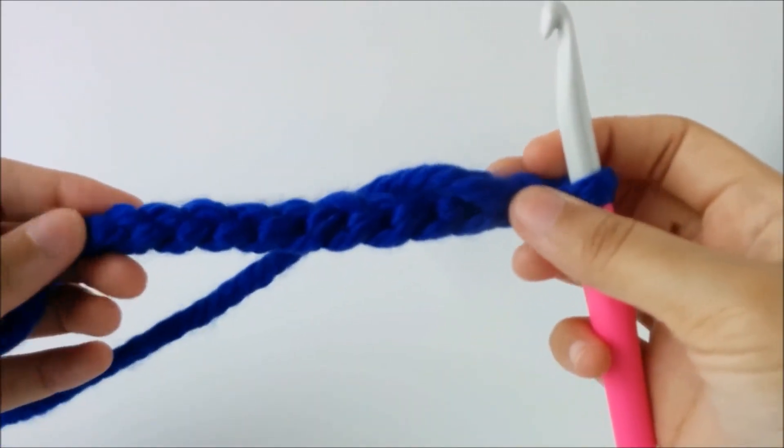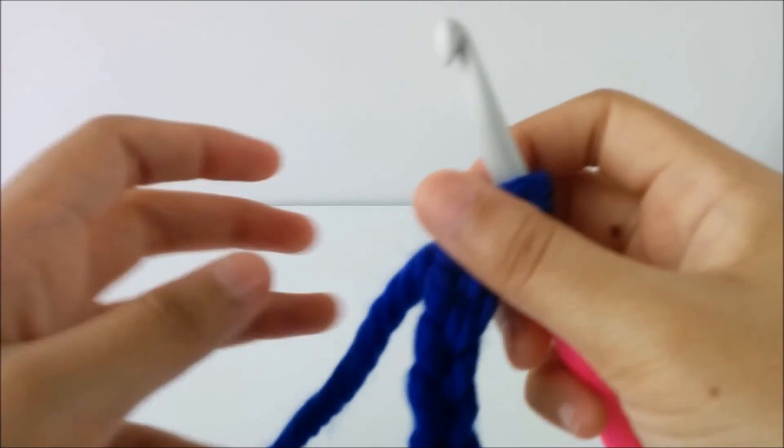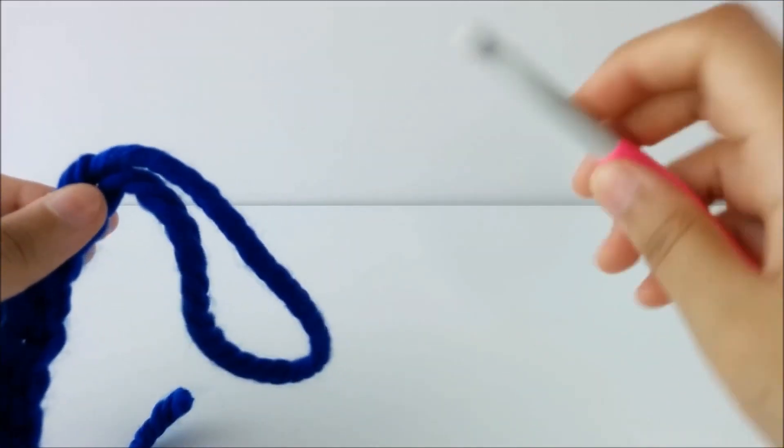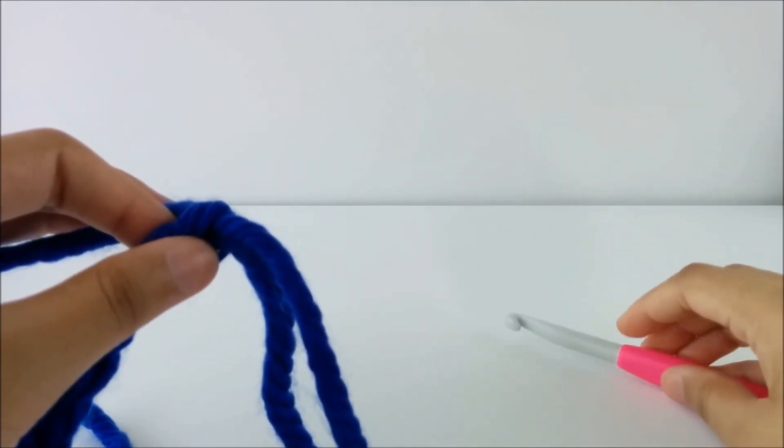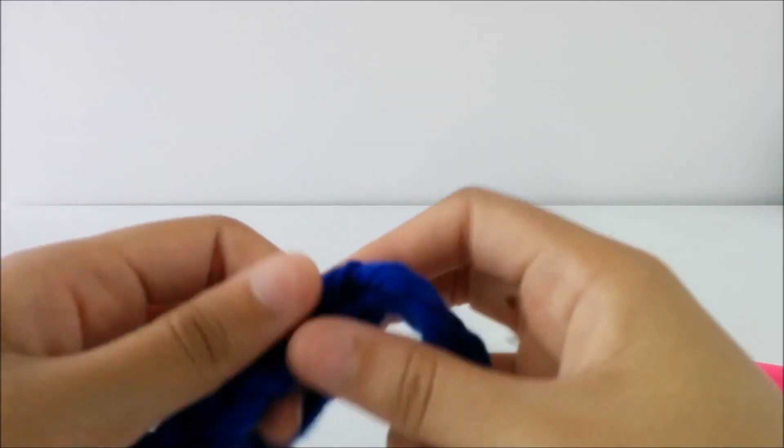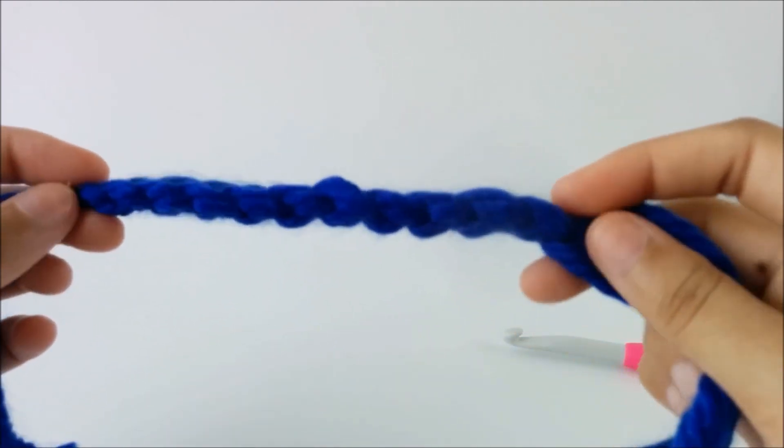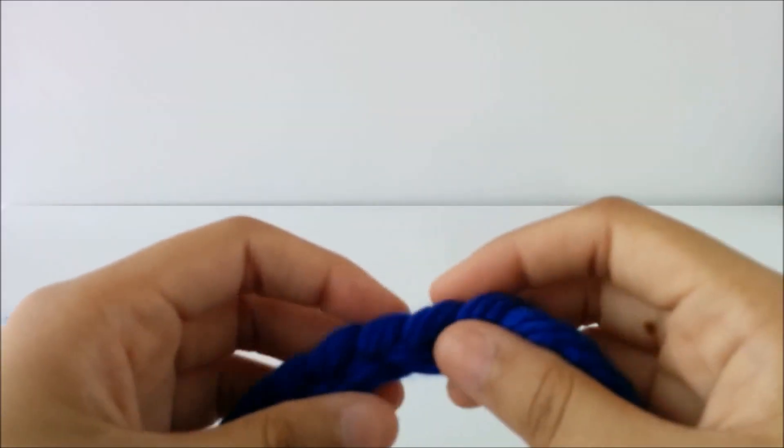Now I'm going to take a second to kind of just talk about this chain for a second. I'm going to make my loop really big. I'm going to take my hook out so it's not in the way. Okay. So here's our chain. There's a couple different parts to this chain.